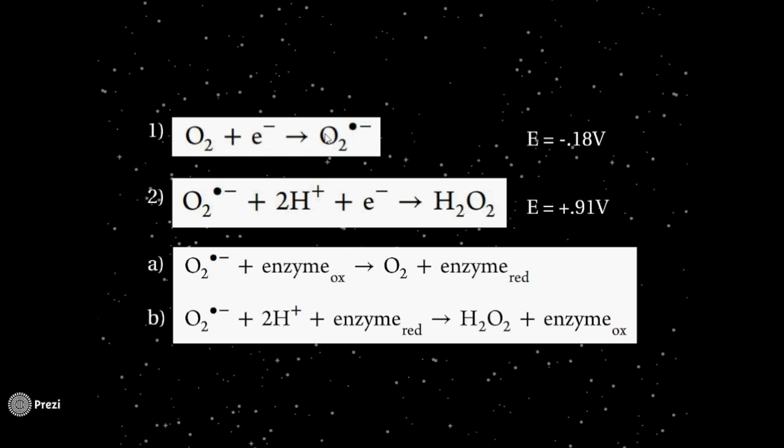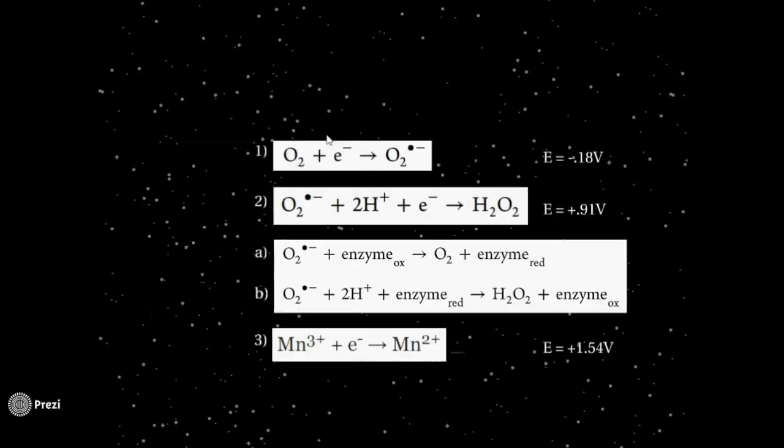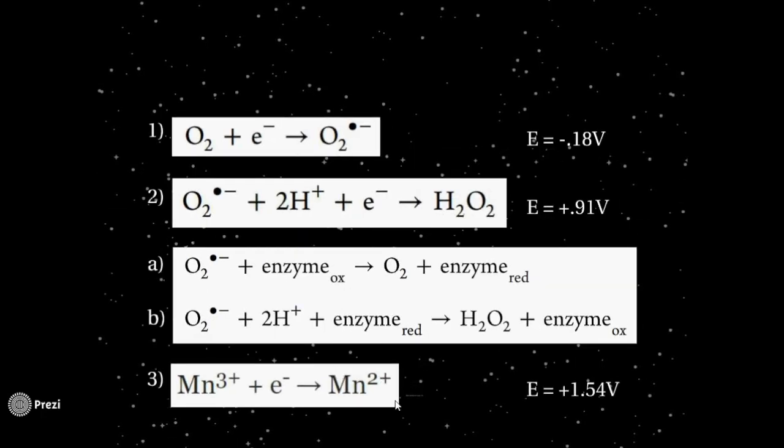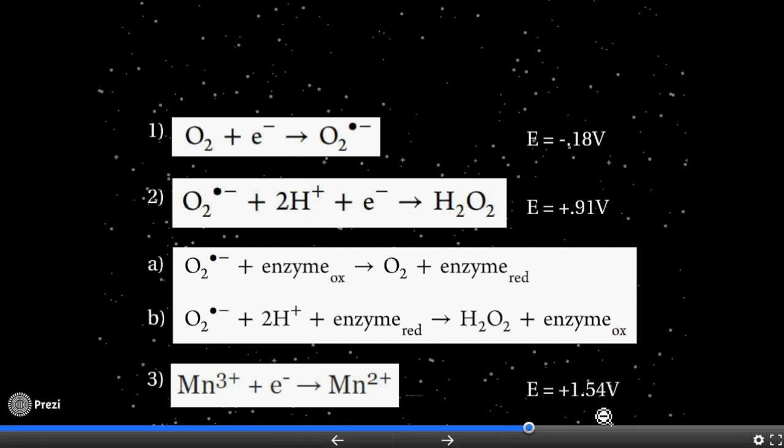However, when considering the reduction and oxidation of manganese, we find the actual reduction from Mn3 plus to 2 plus to be plus 1.54V. This means that if manganese was reduced by reaction A, it would not give up its electron to form hydrogen peroxide in reaction B. In order for this reaction to be favorable, manganese would need to have a reduction potential between negative 0.18V and plus 0.91V.